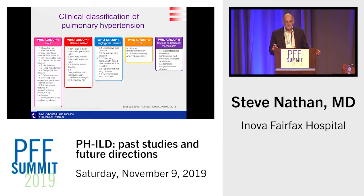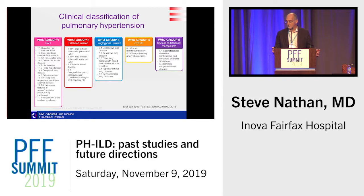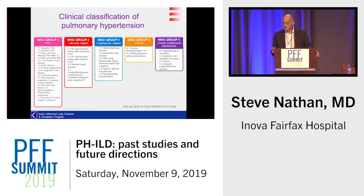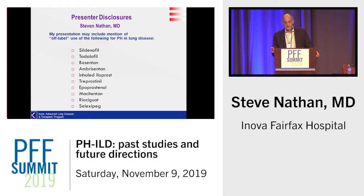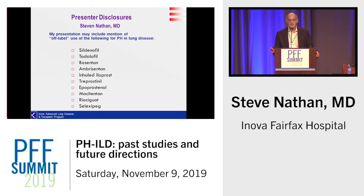When we classify pulmonary hypertension, there are five different groups. Lung disease and interstitial lung disease falls under the category of Group 3 pulmonary hypertension. All the drugs that we have are approved for Group 1 pulmonary hypertension — there are no drugs approved for Group 3. These are all the drugs available for pulmonary hypertension; if I mention them, it's in the context of off-label use, as none are approved for patients with interstitial lung disease.